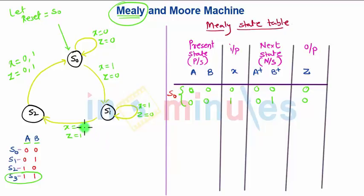Now we will write for state S1. For S1, if S1 is 0, 1, when X equals 0, it will go to state S2 where S2 corresponds to 1, 0 and output is 1.